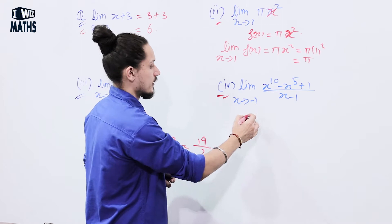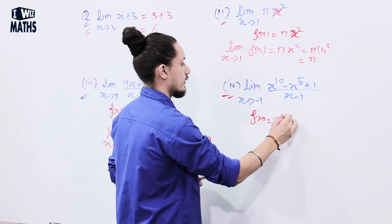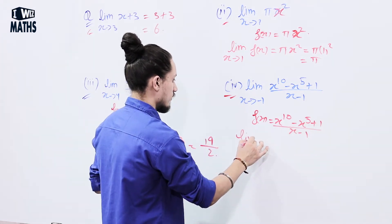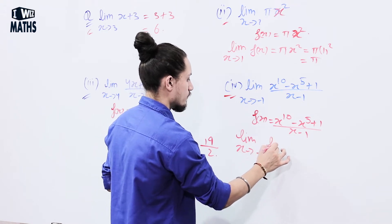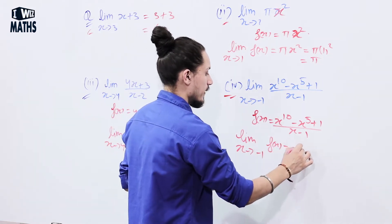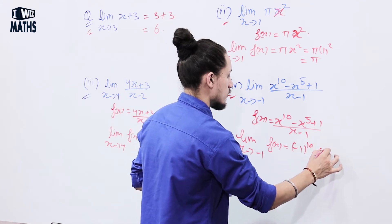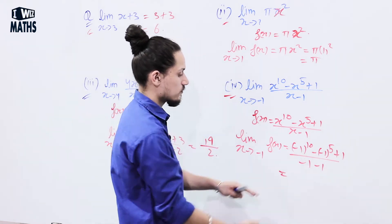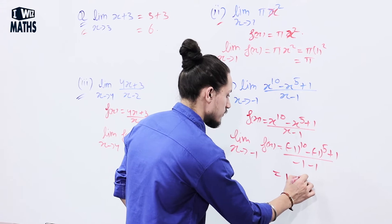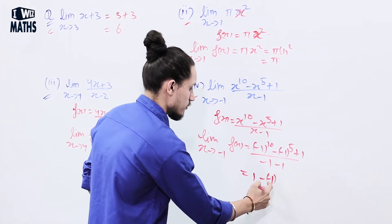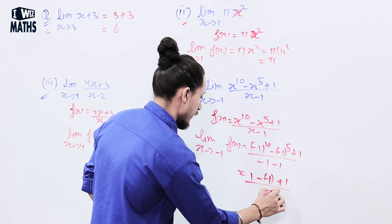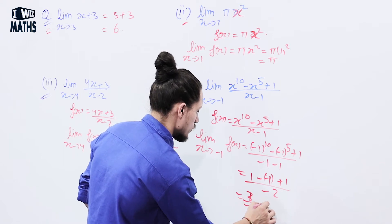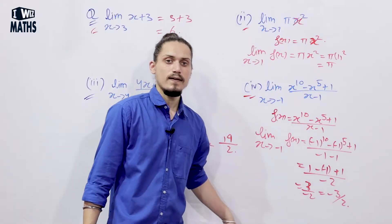The last example: f(x) = (x¹⁰ - x⁵ + 1) / (x - 1). So lim (x → -1) f(x) = ((-1)¹⁰ - (-1)⁵ + 1) / (-1 - 1). Now (-1) to an even power gives 1, minus (-1) is plus 1, so we get (1 + 1 + 1) / (-2) = 3/(-2) = -3/2. And that's the result.